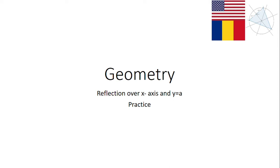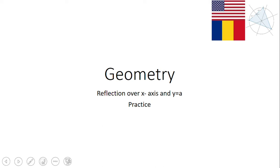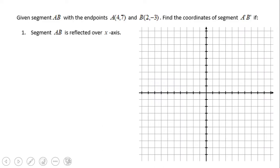Welcome or welcome back to C-Square. In this video clip we're going to talk about reflection over the x-axis and y equals a — in other words, reflecting over a horizontal line. The first example is talking about reflecting a segment with given coordinates over the x-axis.